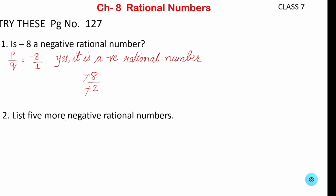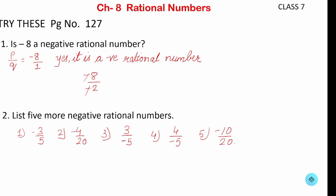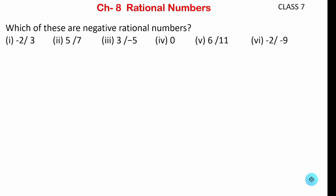The next question is: write at least 5 more negative rational numbers. We can write any rational number such as: minus 3 upon 5, minus 4 upon 20, 3 upon minus 5, 4 upon minus 5, or minus 10 upon 20. We can take any numbers, but there should be at least one negative sign only.